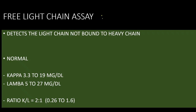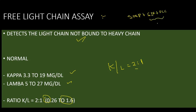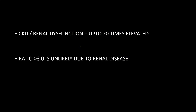The third investigation is the free light chain assay. It detects unbound free light chains. The normal values are: kappa approximately 3–19 mg/dL and lambda 5–27 mg/dL. The normal kappa-to-lambda ratio is 2:1, with a range of 0.2 to 1.6. If we combine serum protein electrophoresis, serum immunofixation, and free light chain assay, sensitivity increases to approximately 95–99% in detecting the monoclonal component. In patients with renal dysfunction, since free light chains are mainly filtered by the kidney, the concentration can rise up to 20 times baseline, so the absolute value might be misleading — we must look at the ratio.